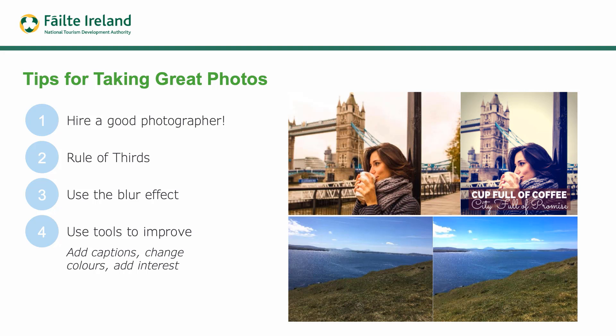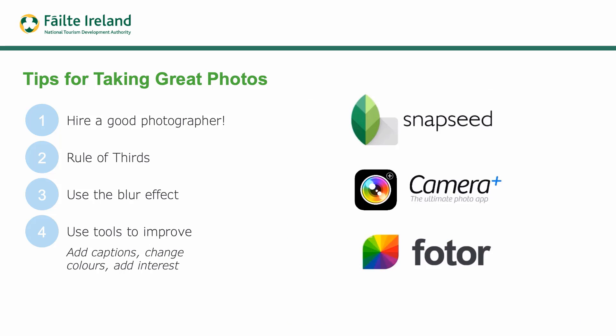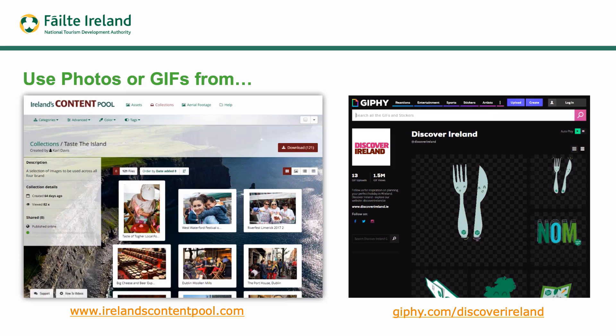There are low-cost tools to help you customize images. You can change the background, add text, and brighten images to make them more interesting and engaging. Applications like Snapseed, Camera Plus, or Fotor are available on iPhone and Android. If you go to irelandscontentpool.com you'll find lots of high-quality imagery. At giphy.com/discoverireland you'll find animated GIFs specific to Taste the Island — definitely worth looking up both.